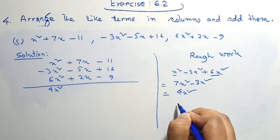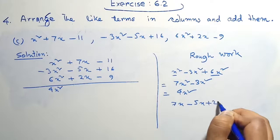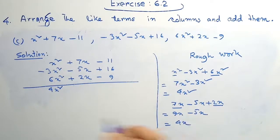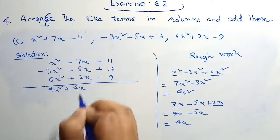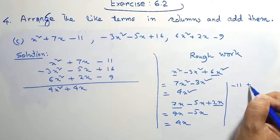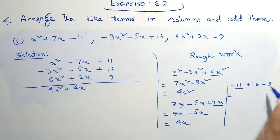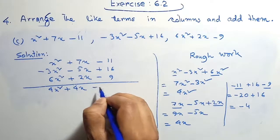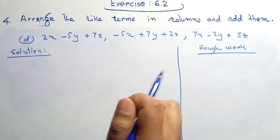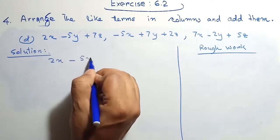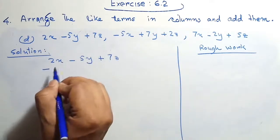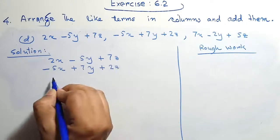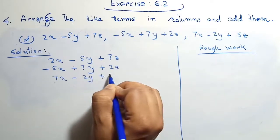Again the value of x equals 7x minus 5x plus 2x. So 7x plus 2x equals 9x minus 5x. Therefore the value of x will be 4x, which is positive. And the value of the constant equals minus 11b² plus 16b².